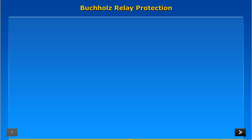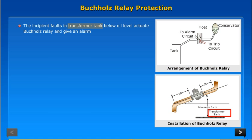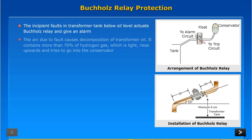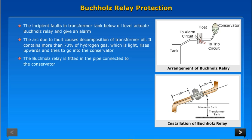Buchholz relay protection. The incipient faults in transformer tank below oil level actuate the Buchholz relay and give an alarm. The arc due to fault causes decomposition of transformer oil. It contains more than 70% hydrogen gas, which is light, rises upwards and tries to go into the conservator. The Buchholz relay is fitted in the pipe connected to the conservator.